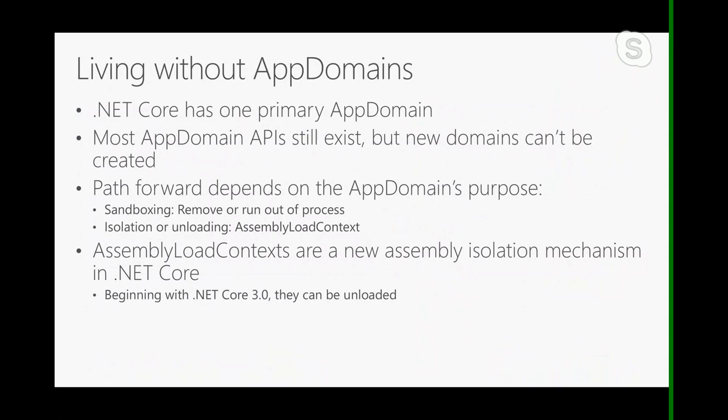App domains. In .NET Core, many of the app domain APIs are still present — you're still able to register an unhandled exception handler and inspect the app domain. But the important difference compared to .NET Framework is that there's only one default app domain and no other app domains can be created. So if your application was previously spinning up secondary app domains, that's going to fail now, and you're going to have to change your app to accommodate the fact that there's only one app domain in a .NET Core process.